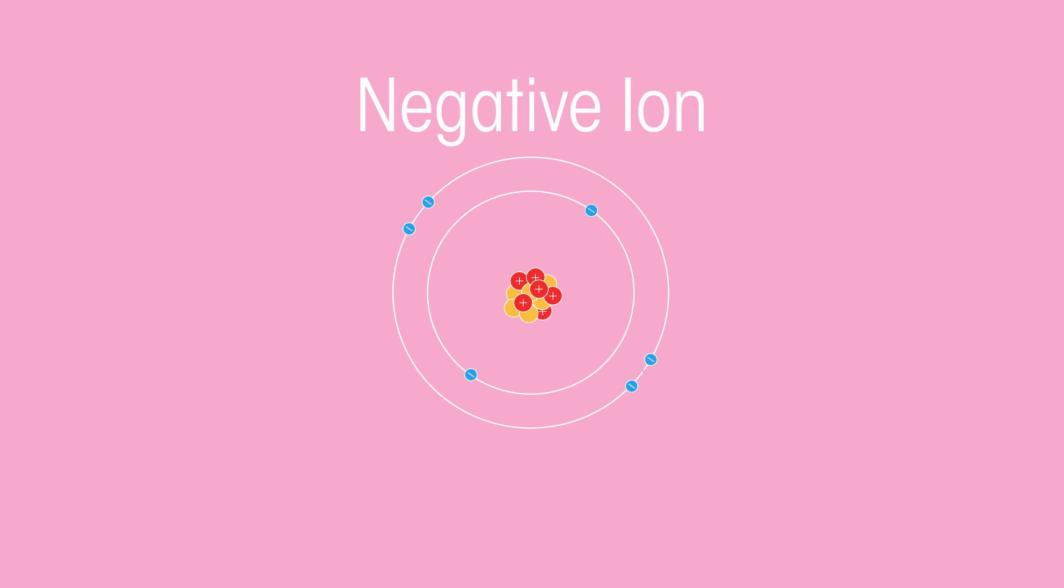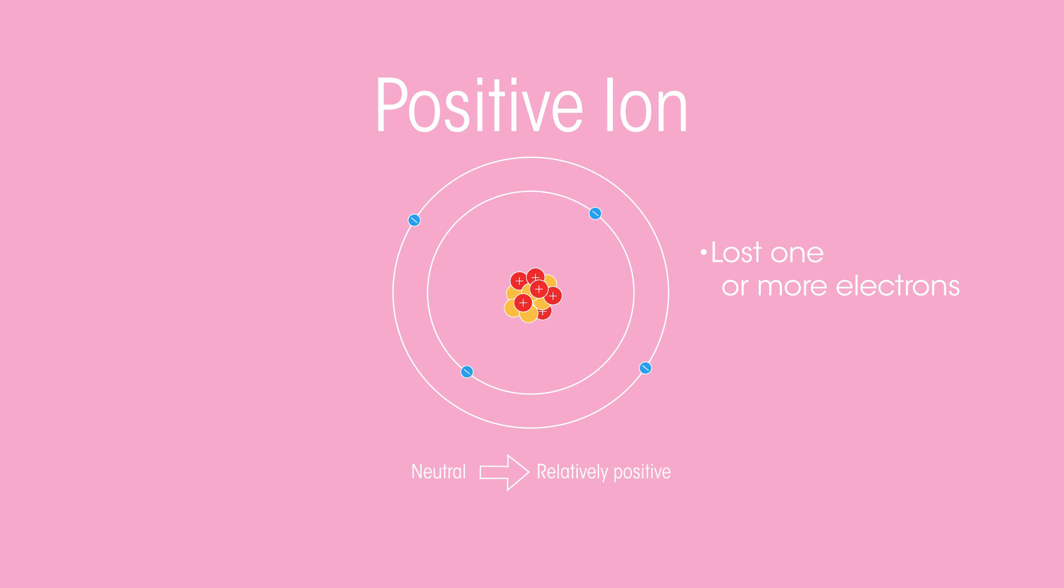A negative ion is an atom that has gained one or more electrons. Electrons are negatively charged, so this makes sense. It has gained more negative charge, and so the atom has gone from neutral to relatively negative. A positive ion is an atom that has lost one or more electrons. Again, this makes sense, as the atom has lost some negative charge to become relatively positive.